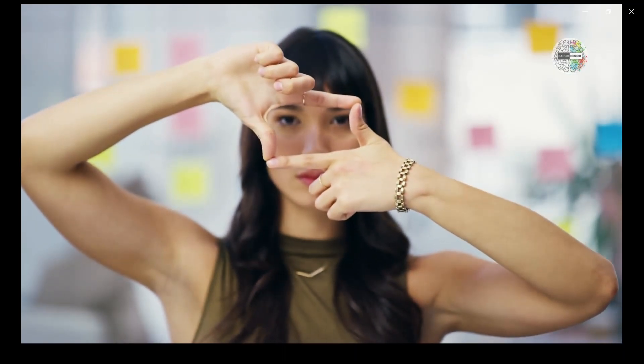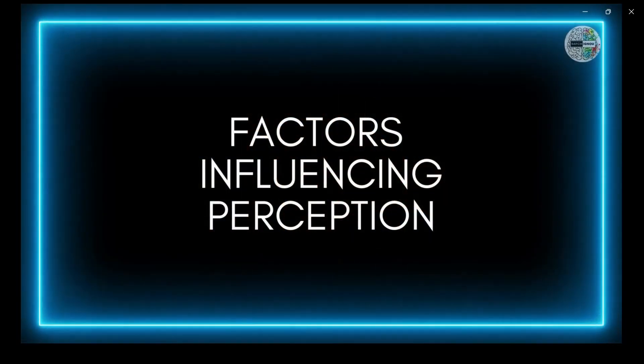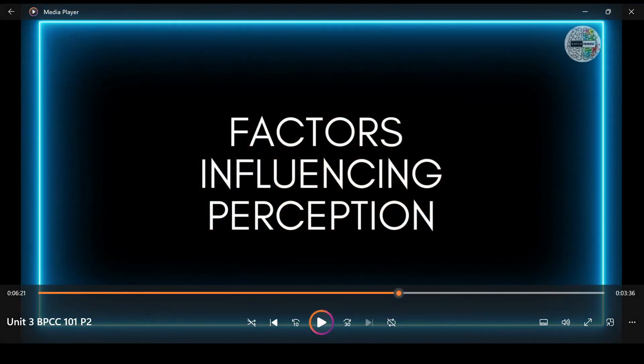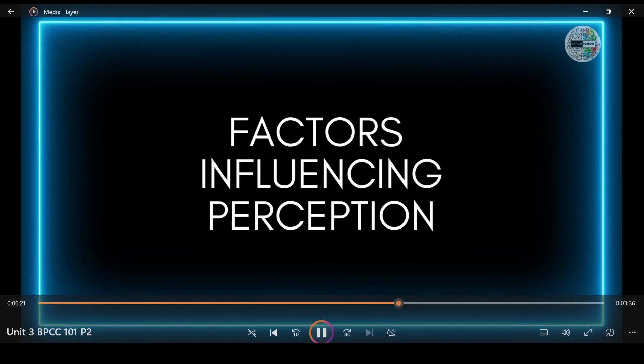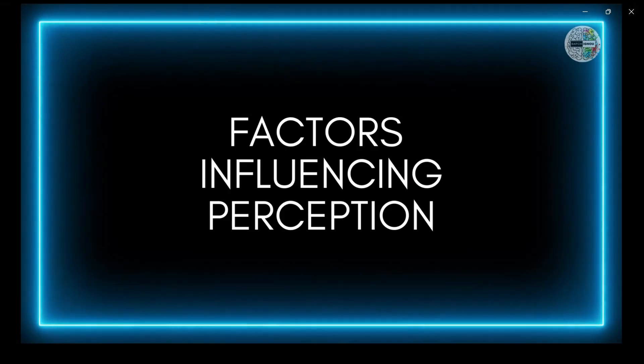These constancies keep our perception stable so we don't get confused by changes in light, distance, or perspective. At this point it is important to understand that perception can also be influenced by various factors. Here are the key ones.